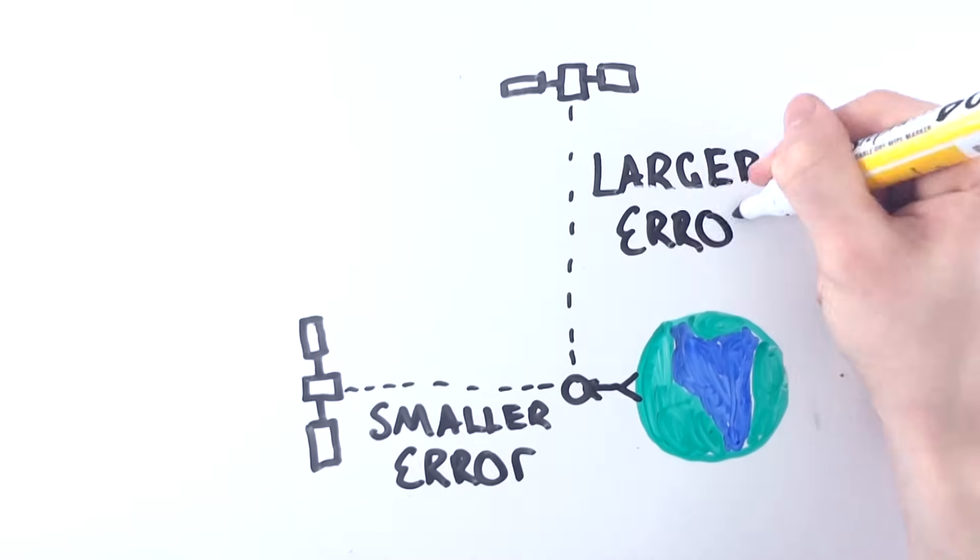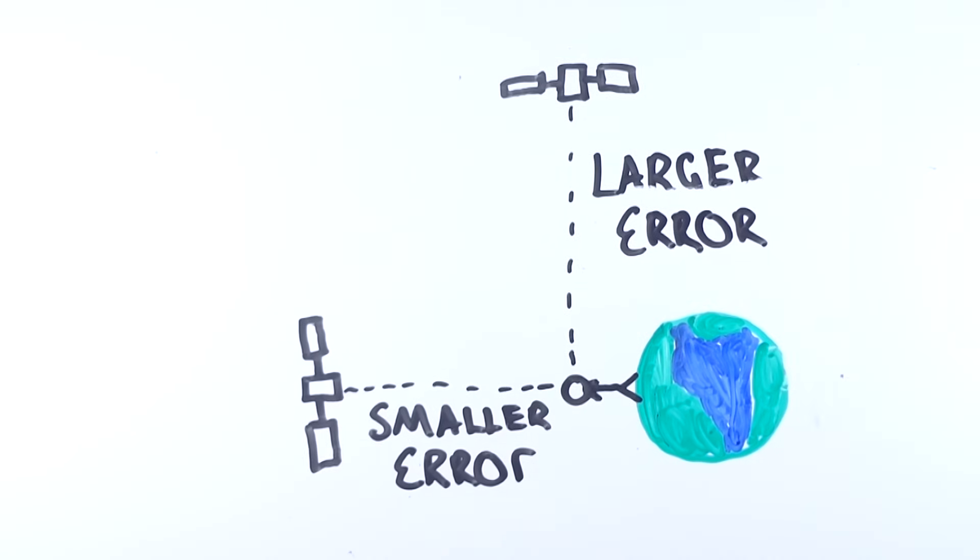This error is substantially smaller when satellites are directly overhead, compared to being larger the closer the satellites are to the horizon relative to you, as the path between you and the GPS satellites goes through more of the atmosphere compared to being directly overhead.